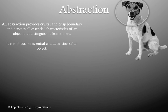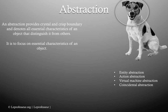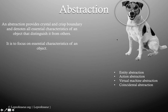Let's try to identify what different kinds of abstraction we can have. Typically we find four kinds: entity abstraction — for example, this dog becomes an entity at one level of abstraction; action abstraction — the dog barks, fights, or runs, focusing on actions taken by the entity; virtual machine abstraction — representing information in an abstract form that can be processed by different computing platforms.